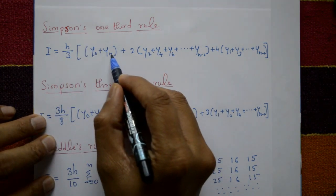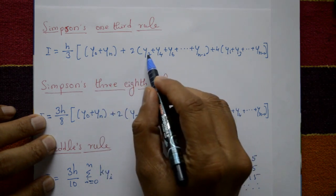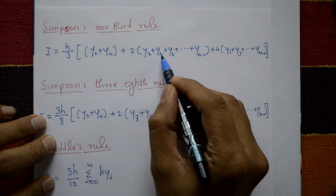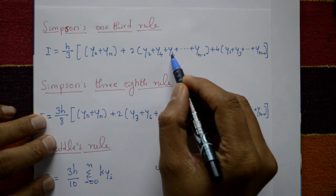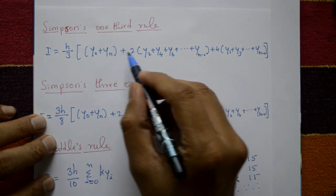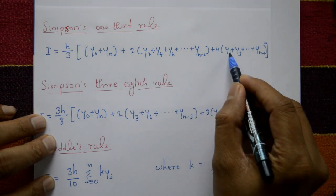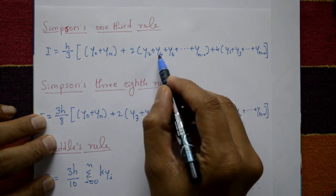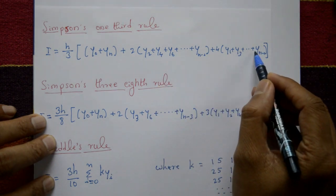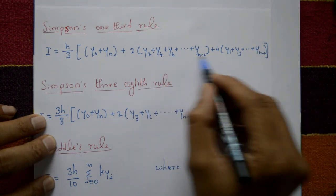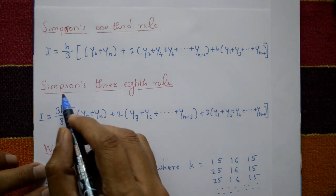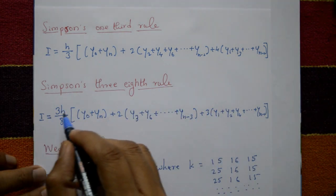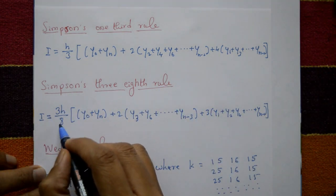In Simpson's one-third rule: h is the equal distance, initial value is y-naught, final value is y-n, 2 is multiplied by even-indexed terms y2, y4, y6, and 4 is multiplied by the remaining odd-indexed terms y1, y3, y5, y7. The second rule is Simpson's 3/8 rule, where I is equal to 3h by 8.